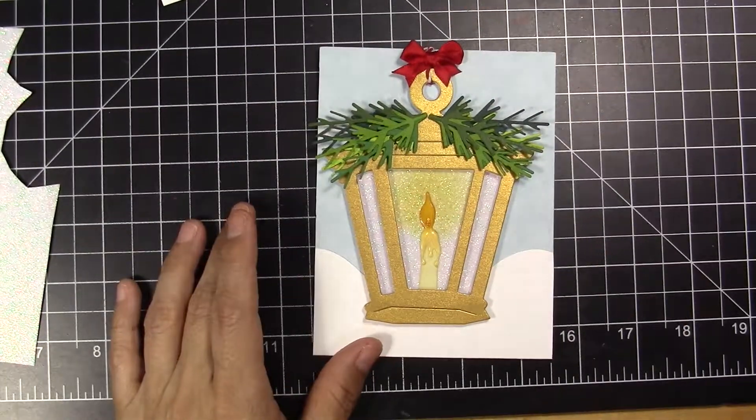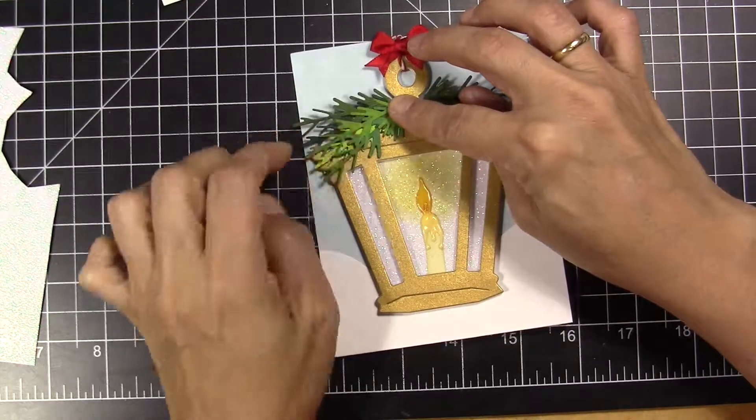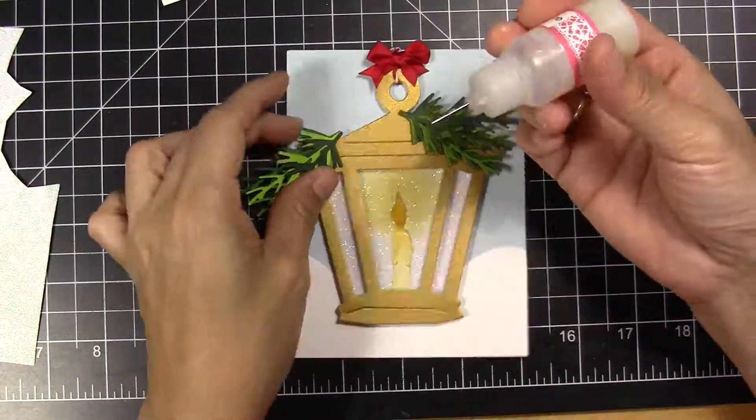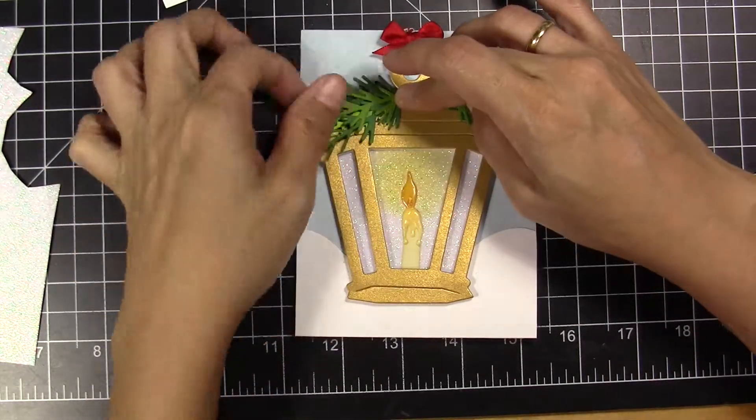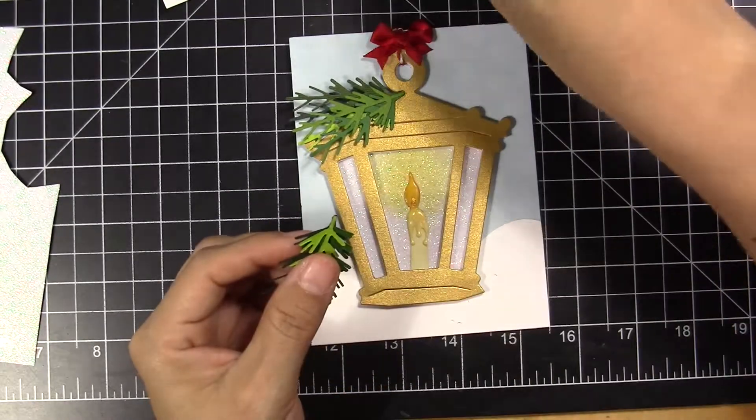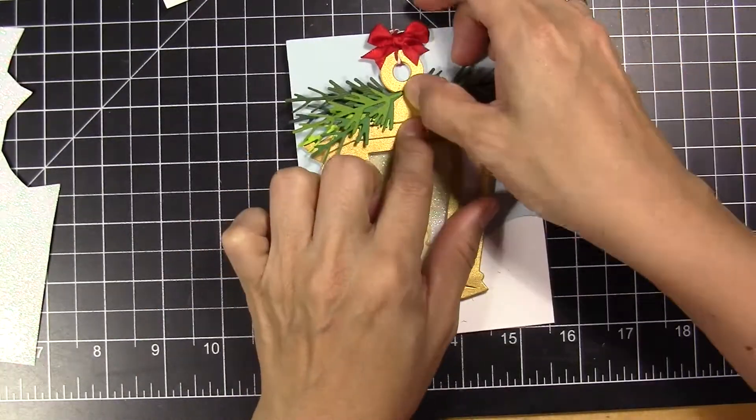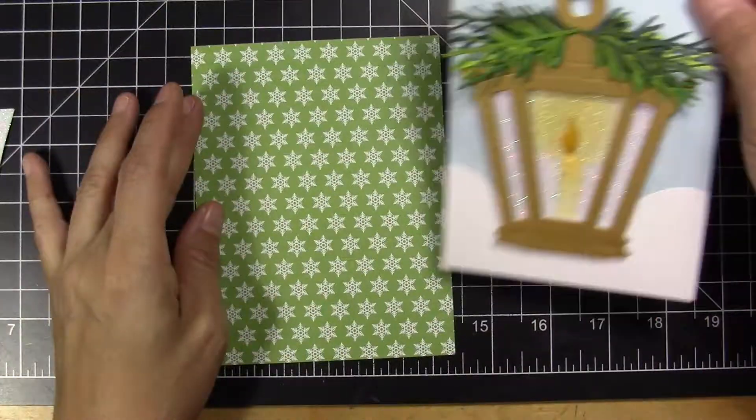Now I'm going to glue the evergreen on the top of the lamp, one on each side. And at the beginning I added the bow on the top of the hanger, but I didn't like it there, and I'm just going to remove it from there and put it in the middle of the evergreen.